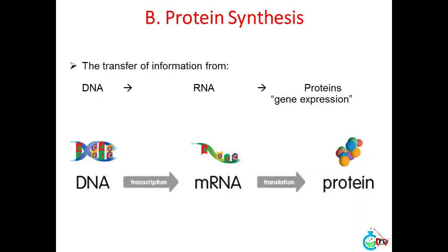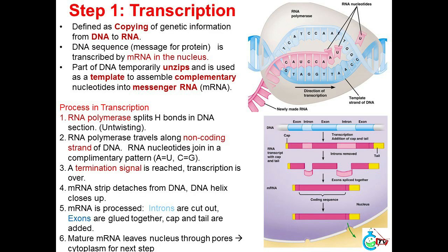B. Protein synthesis — the transfer of information from DNA to RNA to proteins (gene expression). Step 1: Transcription — defined as the copying of genetic information from DNA to RNA. The DNA sequence (message for protein) is transcribed by mRNA in the nucleus. Part of the DNA temporarily unzips and is used as a template to assemble complementary nucleotides into messenger RNA (mRNA).